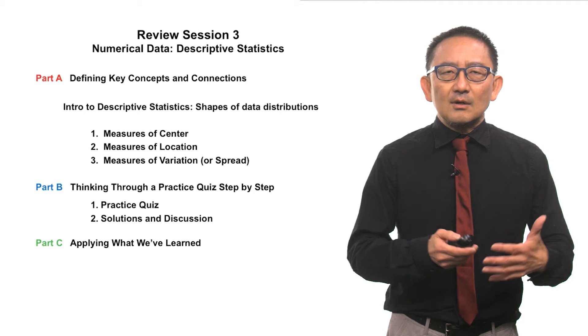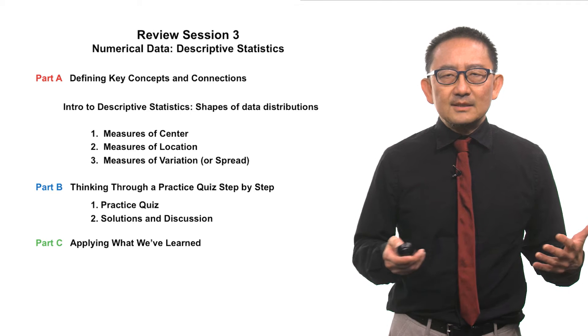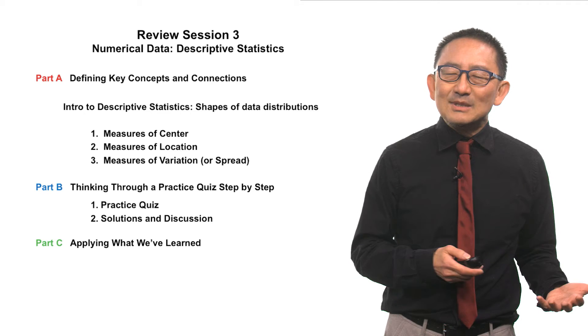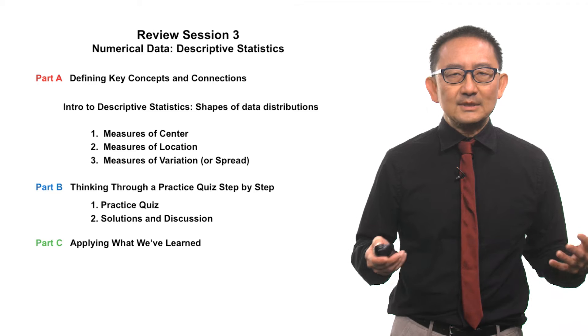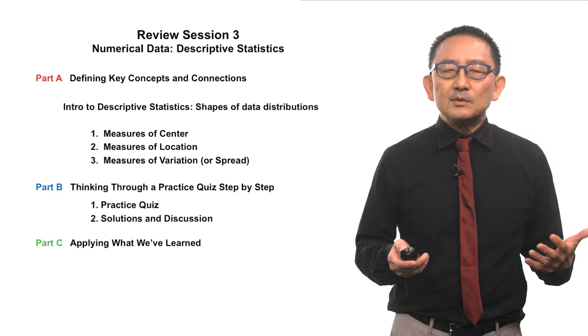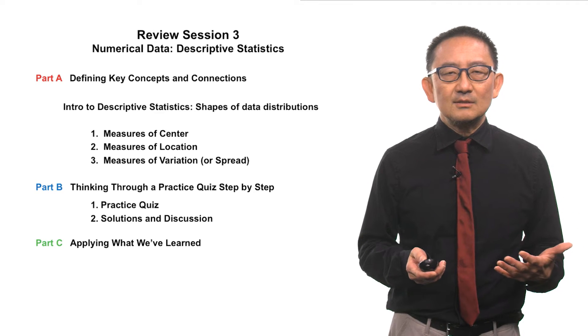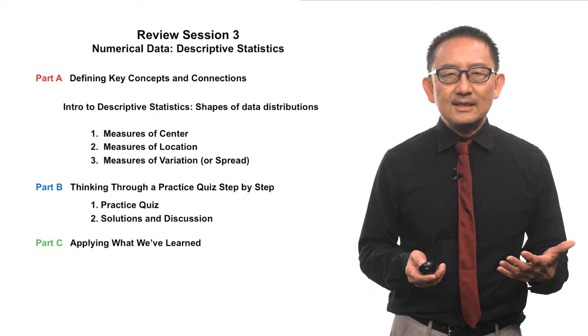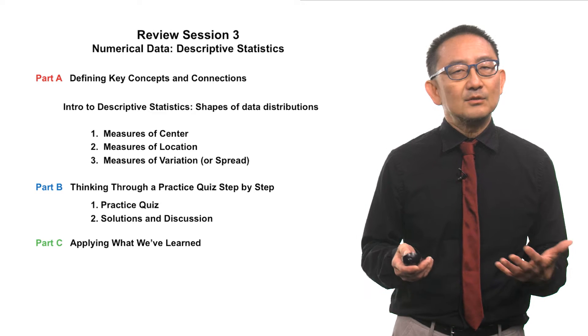Our overview will begin by describing some common shapes of distributions that you'll encounter. Then we will talk about measures—measures of center, measures of location, and measures of variation or spread.